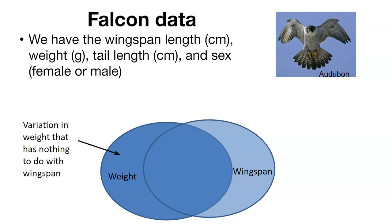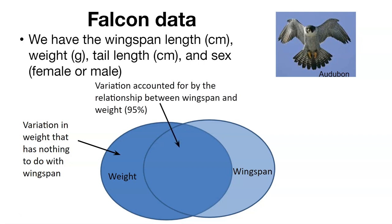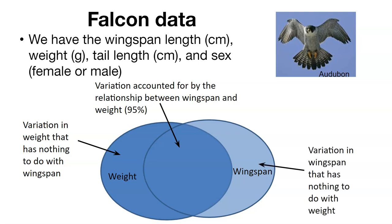Well, there's variation in weight that has nothing to do with wingspan — maybe genetically some falcons tend to weigh more than others. We also have variation that's accounted for by the relationship between wingspan and weight. As it turns out, they might be correlated at a 95% level, or their correlation coefficient is 0.95. On the other hand, there's also variation in wingspan that has nothing to do with weight, meaning there's still some variability not accounted for — there's not a perfect relationship between falcon wingspan length and weight.